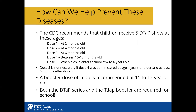So how can we help prevent these diseases? With vaccines. The CDC recommends that children receive five DTaP shots: Dose 1 at 2 months, Dose 2 at 4 months, Dose 3 at 6 months, Dose 4 between 15 to 18 months, and Dose 5 when the child enters school at 4 to 6 years old. Dose 5 is not necessary if Dose 4 was administered at age 4 years or older and was at least 6 months after Dose 3. A booster dose of Tdap is recommended at 11 to 12 years old, and both the DTaP series and the Tdap booster are required for school.